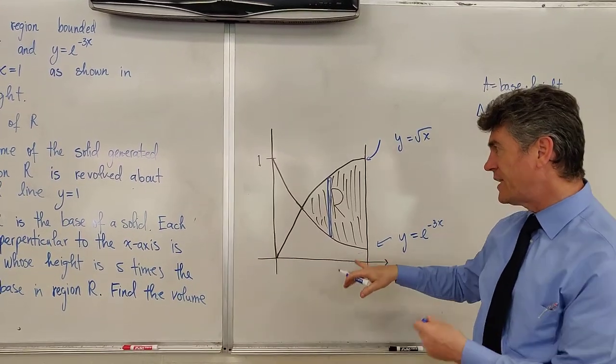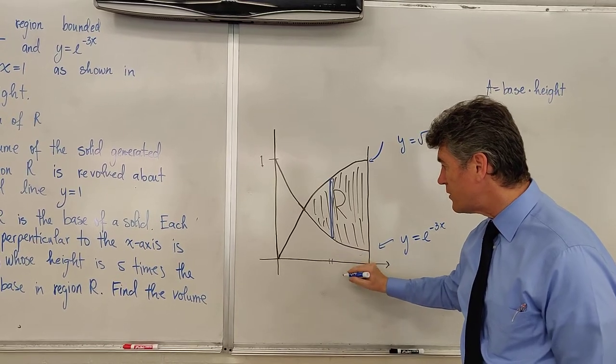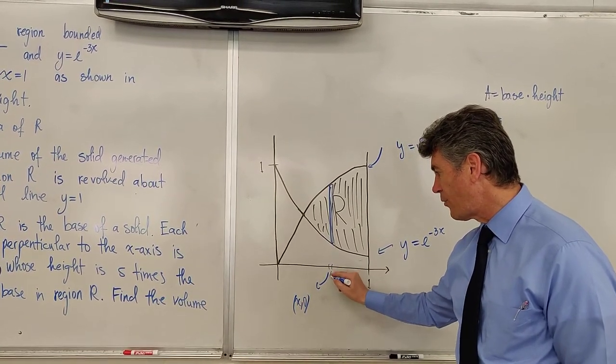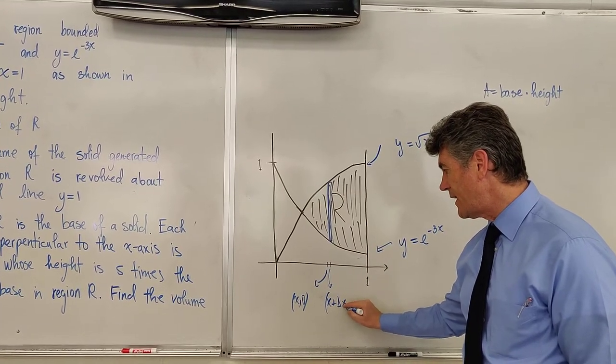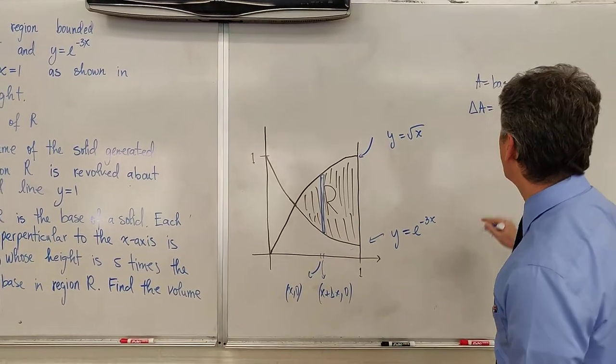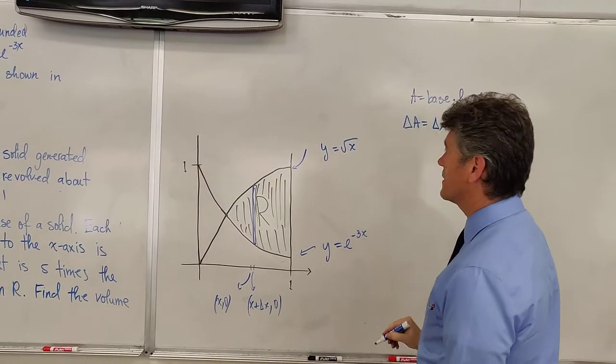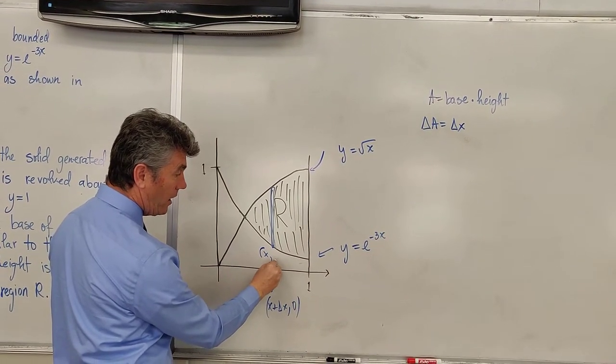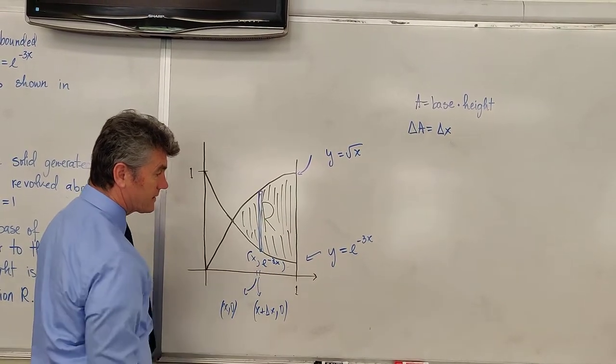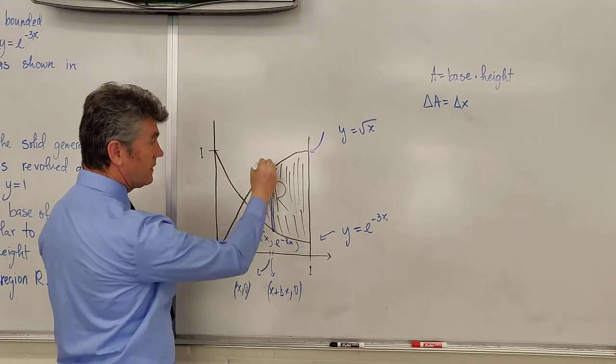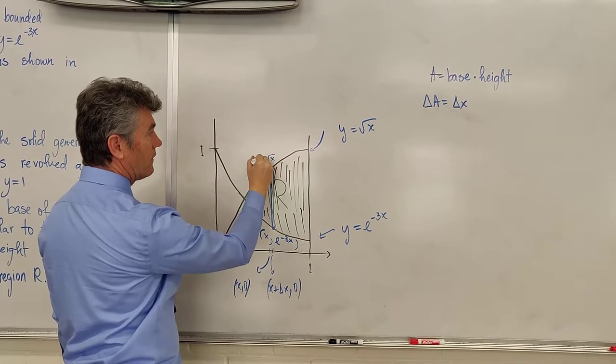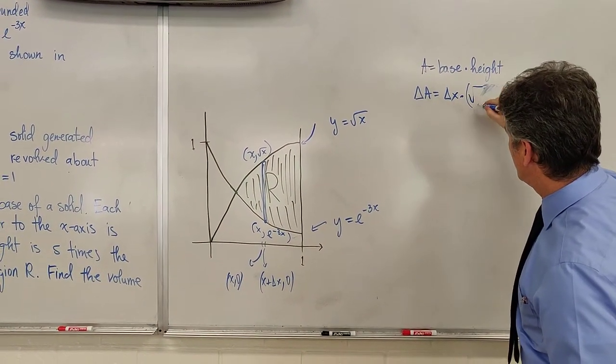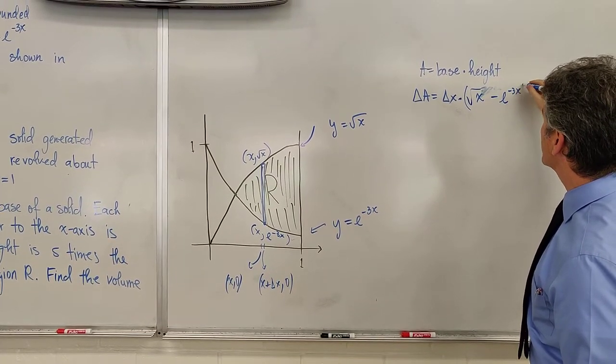We start by saying the area of the rectangle is equal to base times height. And so we write dA, the change in the area. The area of this one representative rectangle is equal to, so you take a look at the base. This point right here has coordinates x comma 0, and this point right here has coordinates x plus delta x comma 0. So the base of this rectangle is delta x. What about the height of the rectangle? Not too bad. This point right here has coordinates x comma e raised to the power of the negative 3x. The point up here has coordinates x comma square root of x. So the height is square root of x minus e raised to the power of the negative 3x.